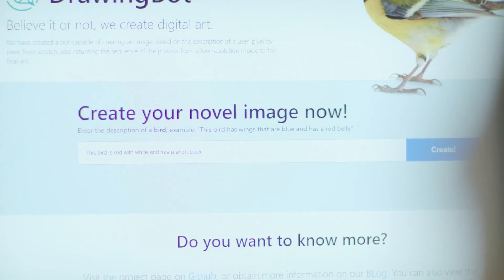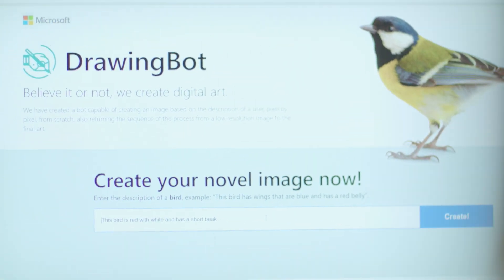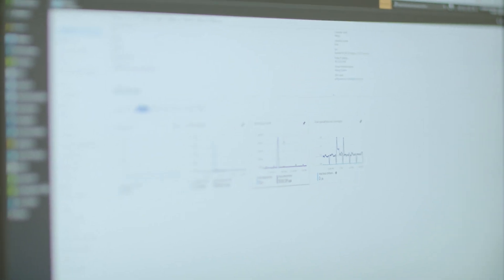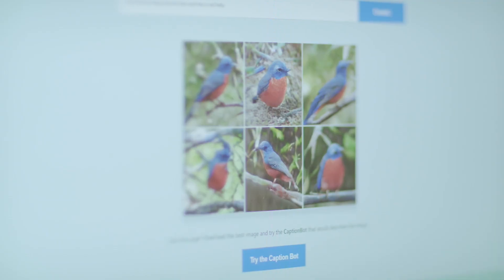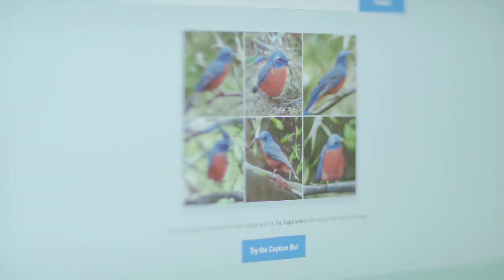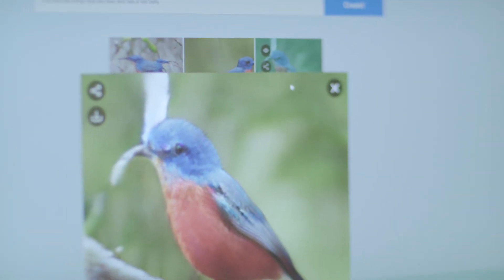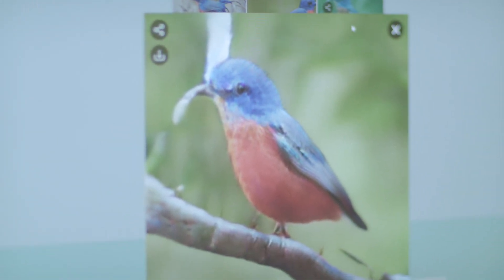One of the cool experiments that I've been able to work on recently is something called an attention GAN that enables the computer to actually draw an image of a bird based upon a textual description. It uses a generative adversarial network to create new and novel pictures of birds—not something that it looks up, but something that it creates pixel by pixel on its own.